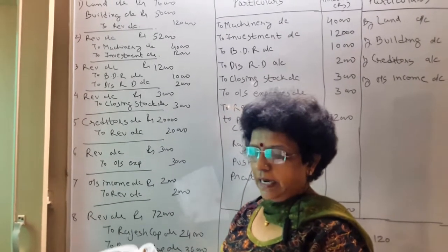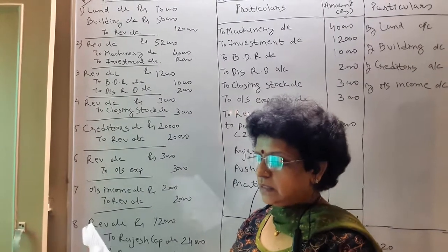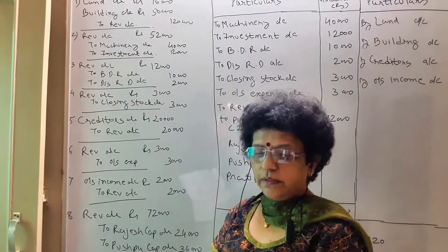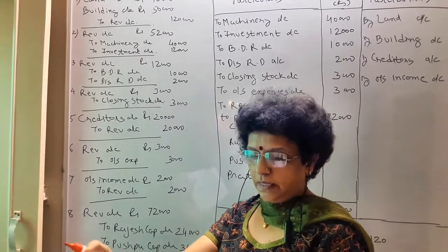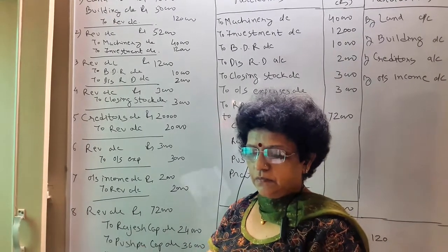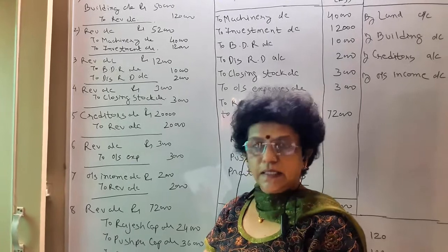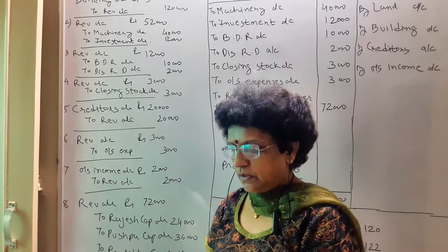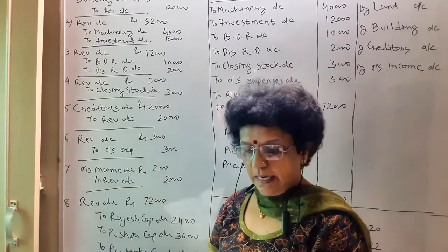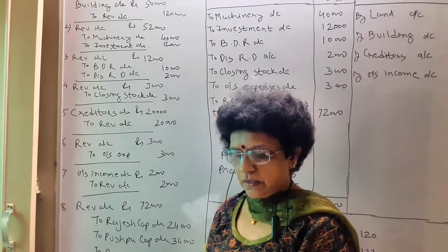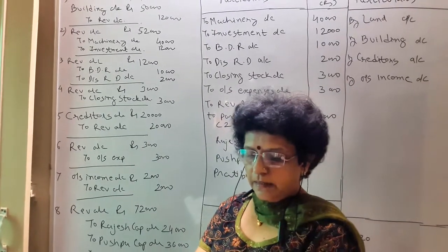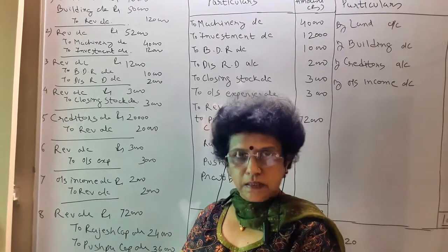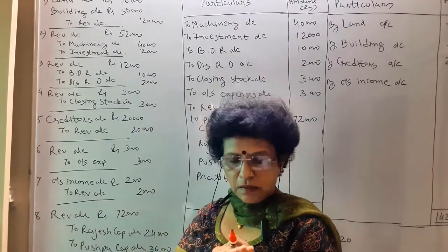Rajesh, Pushpa and Prativa are the partners of the partnership firm. Their profit sharing ratio, that is the old ratio, is 2 is to 3 is to 1. The firm's balance sheet given on 31st March 2017 is as under. Open your textbook and see the question along with the additional information mentioned.